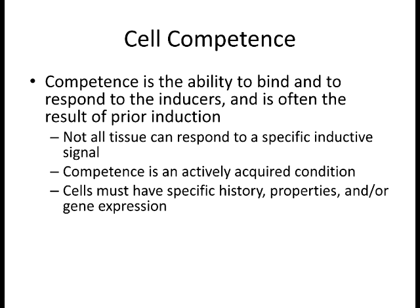Each tissue in the human body has a very limited level of competence. We release hormones all the time, but hormones only affect tissues expressing the receptor for that hormone. In development, you can send all these proteins out into the area, and only those cells with the receptor to respond will respond. That's where competence comes into play—built up over time through the earliest stages of induction that start telling cells to express certain receptors.